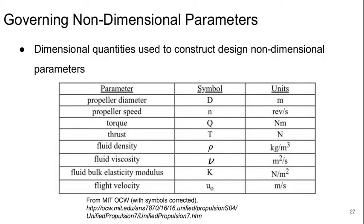Finally, let's turn our attention to the non-dimensional parameters that are relevant for propellers. We'll start with the dimensional quantities that we need as input: the propeller diameter, the propeller rotational speed, the torque, the thrust, the density of the fluid, the viscosity of the fluid, the bulk elastic modulus of the fluid, and the flight velocity.